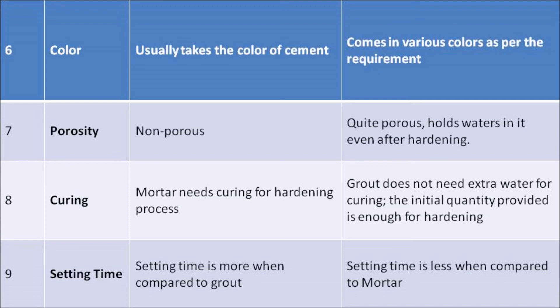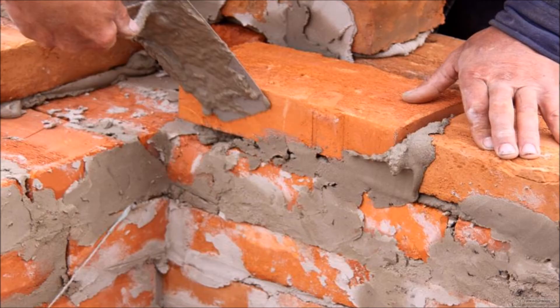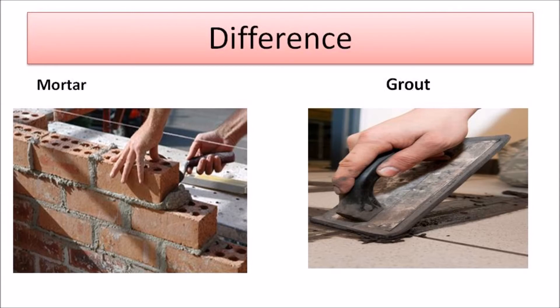Mortar usually takes the color of cement, but grout comes in various colors as per the requirement. Regarding porosity, mortar is a non-porous material, but grout is quite porous and it holds water even after the hardening process. For curing, mortar requires more water for the hardening process, but grout does not — the initial quantity provided is enough. Finally, the setting time of mortar is more when compared to grout, while the setting time of grout is less when compared to mortar.